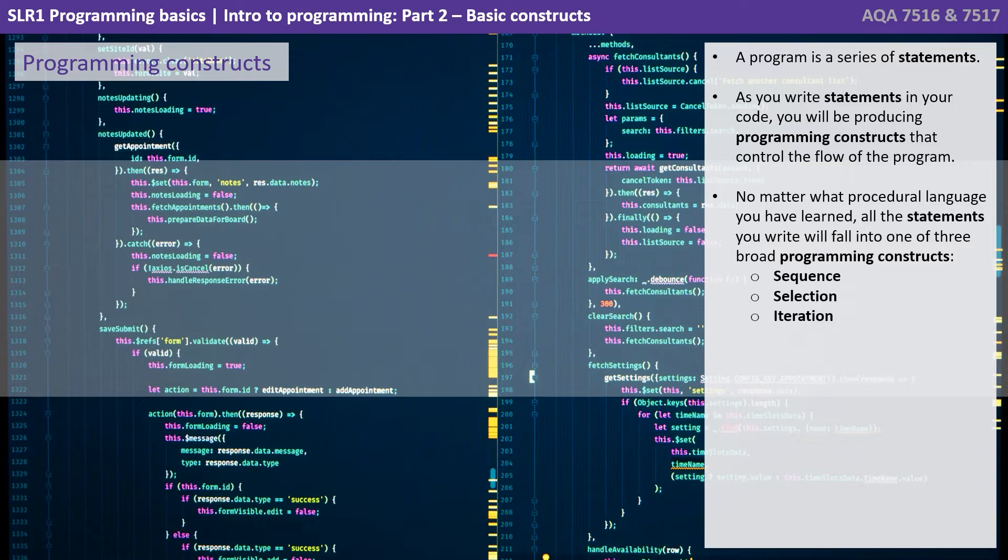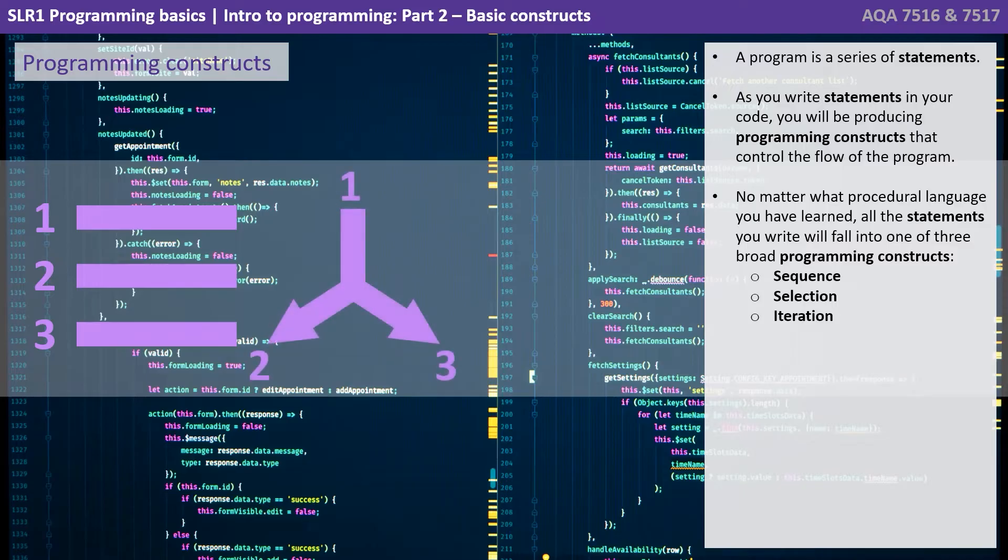A program is a series of statements. As you write statements in your code, you'll be producing programming constructs that control the flow of the program. No matter what procedural language you have learned, all the statements you write will fall into one of three broad programming constructs: sequence, selection, and iteration.